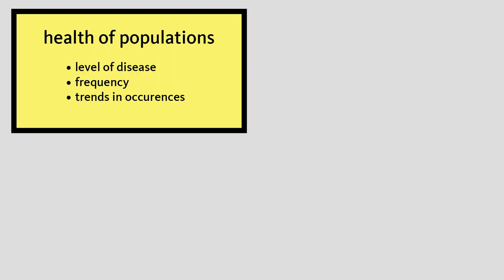So, to bring all of this together, what is epidemiology as a scientific discipline most interested in? First, epidemiology has an aim to describe the health of populations through determining the overall level of disease, the frequency of disease in specific groups, and trends in disease occurrence.